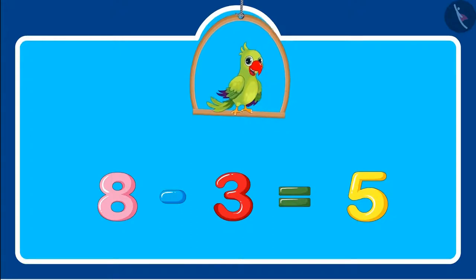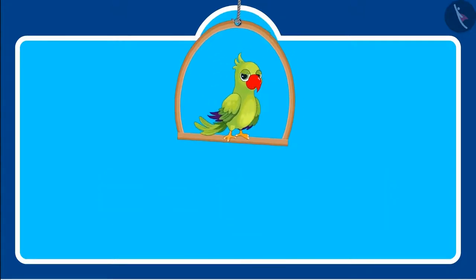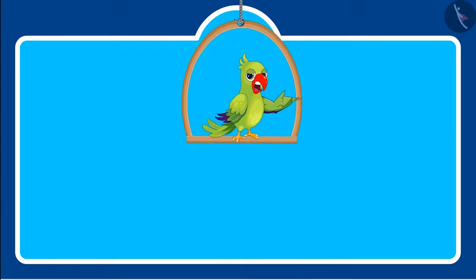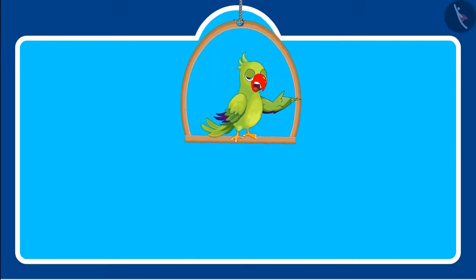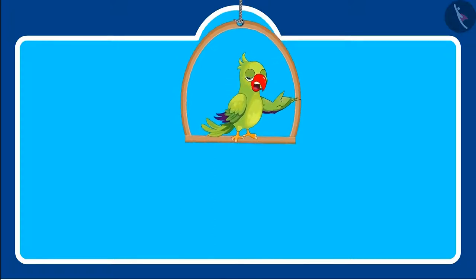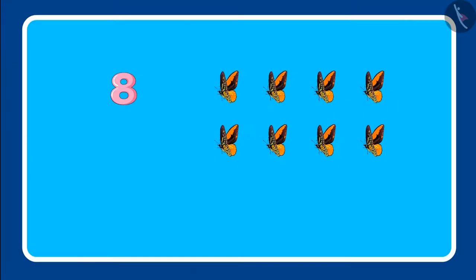Friends, do you know that we can write this in another way also? Don't worry, I will tell you. We can also write it in this way: first there were a total of eight butterflies, so we will write the total number on top.